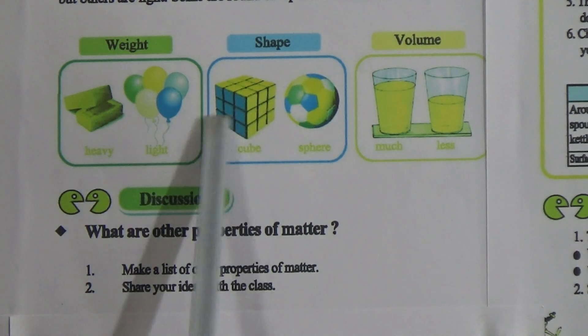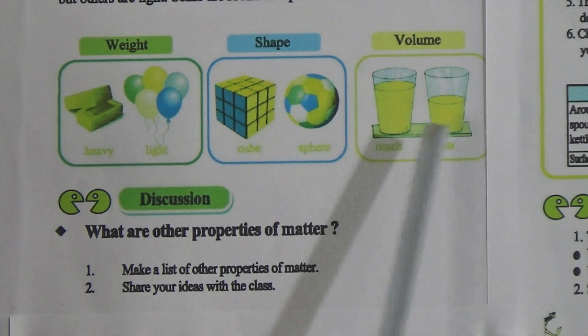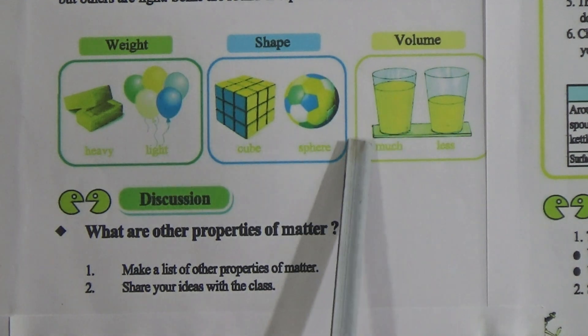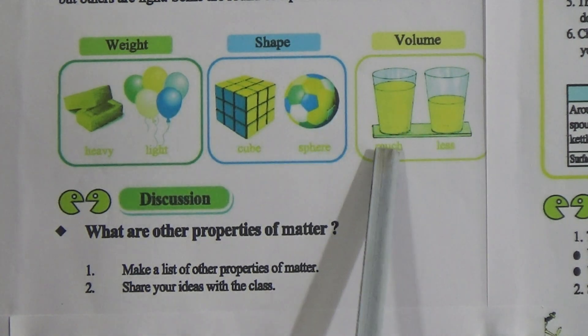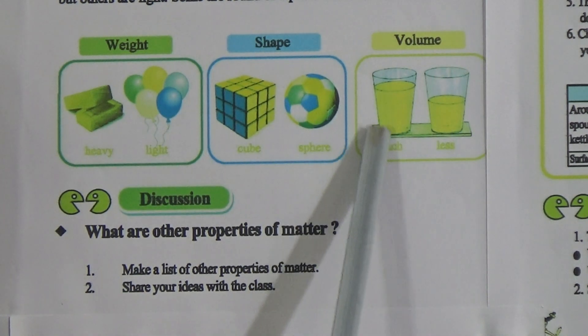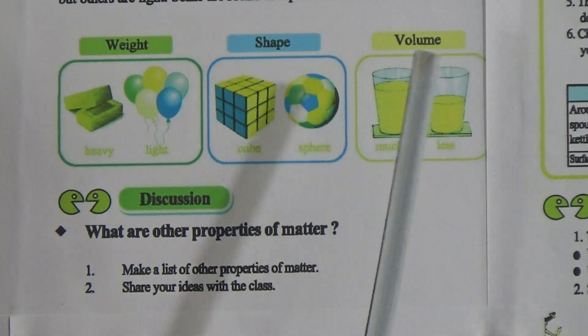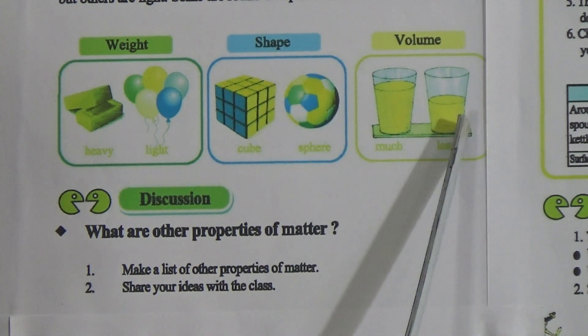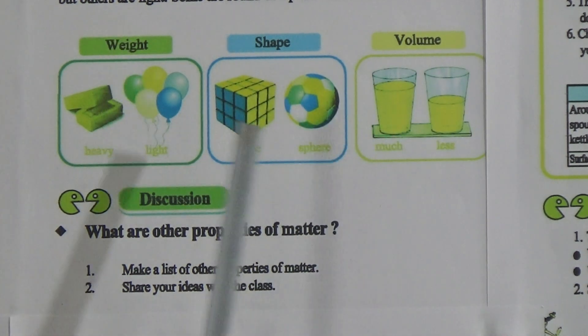Regarding shape, this is a cuboid shape and this is a sphere shape. Looking at volume, if there is more water here and less water there, the volume is less in one and more in the other. Now let us come to the forms of water — changes in the forms of water.